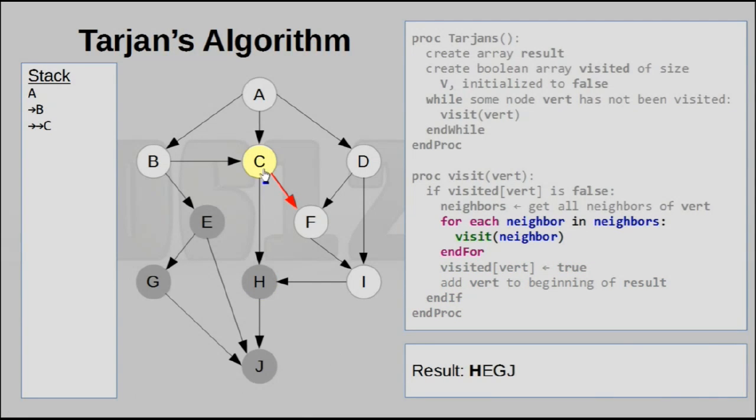The only other neighbor connected to C is F, so we go over to F. F only has one neighbor, which is I, so we go over to that. I only has one neighbor, which is H, so we go to that.